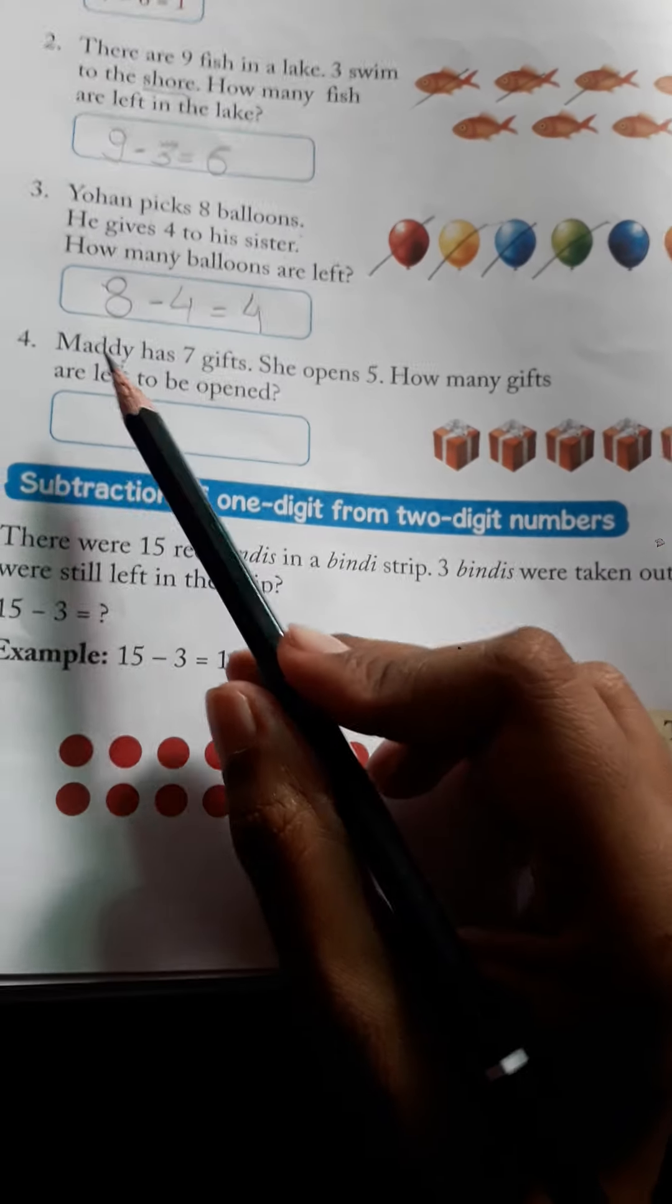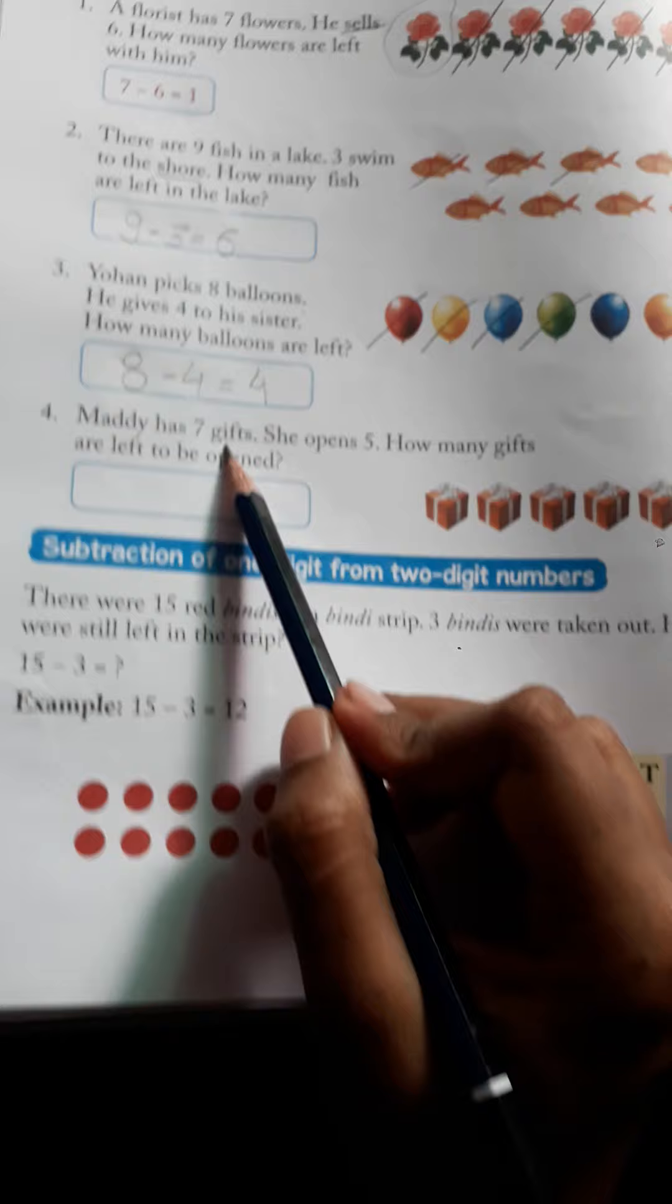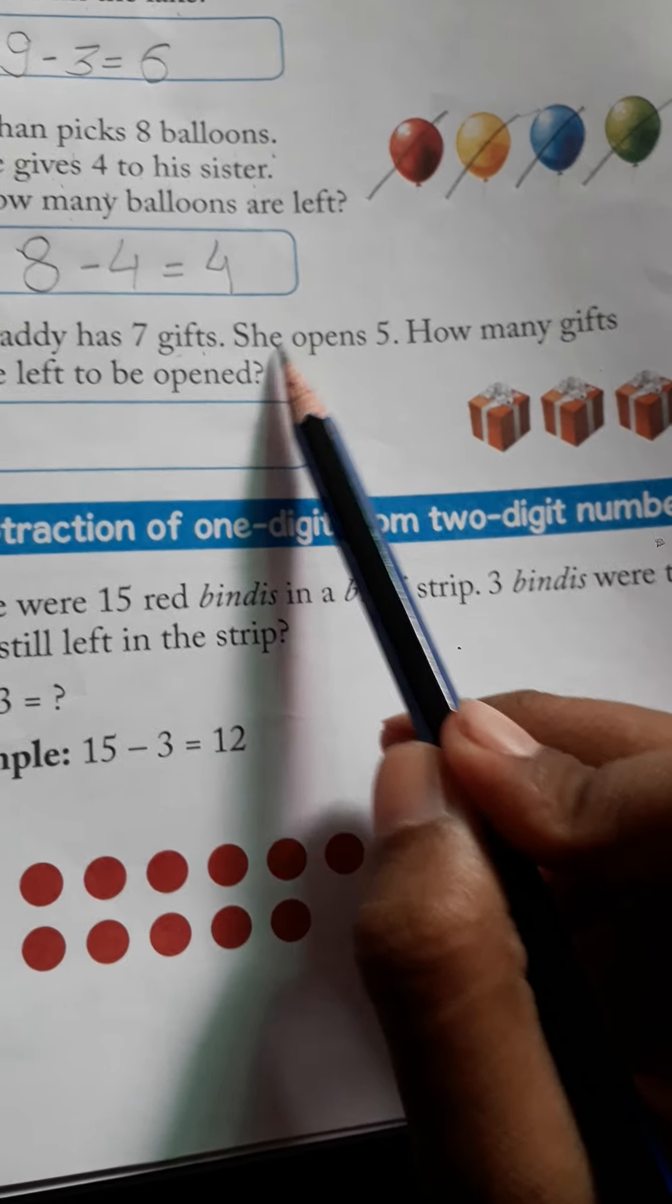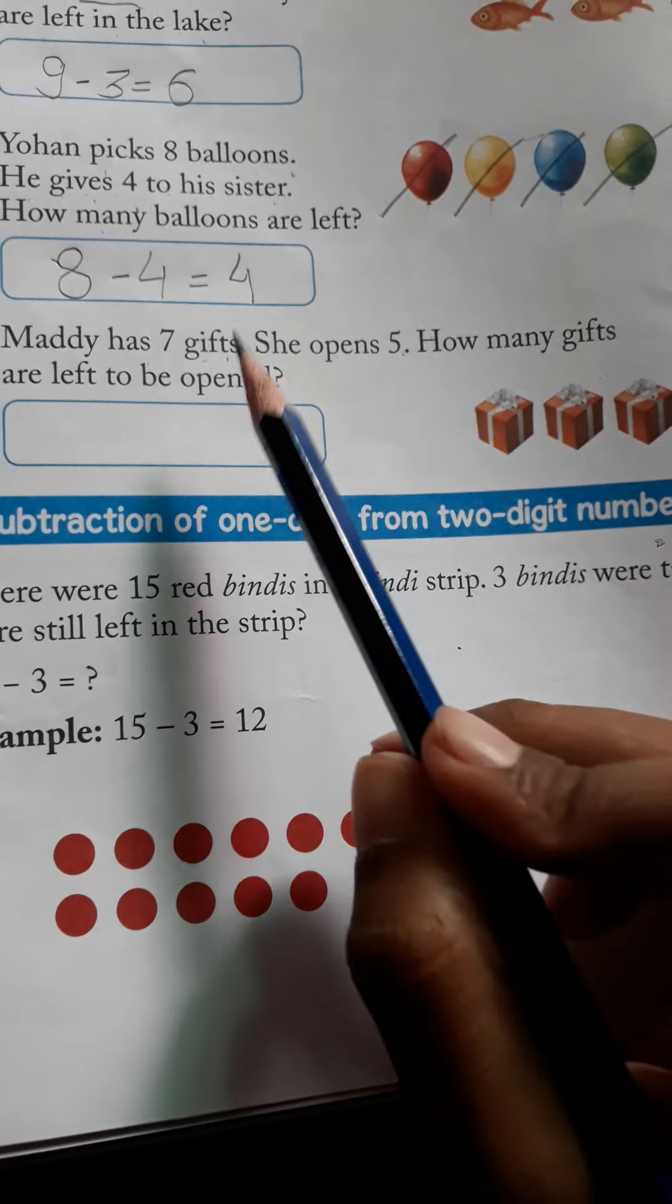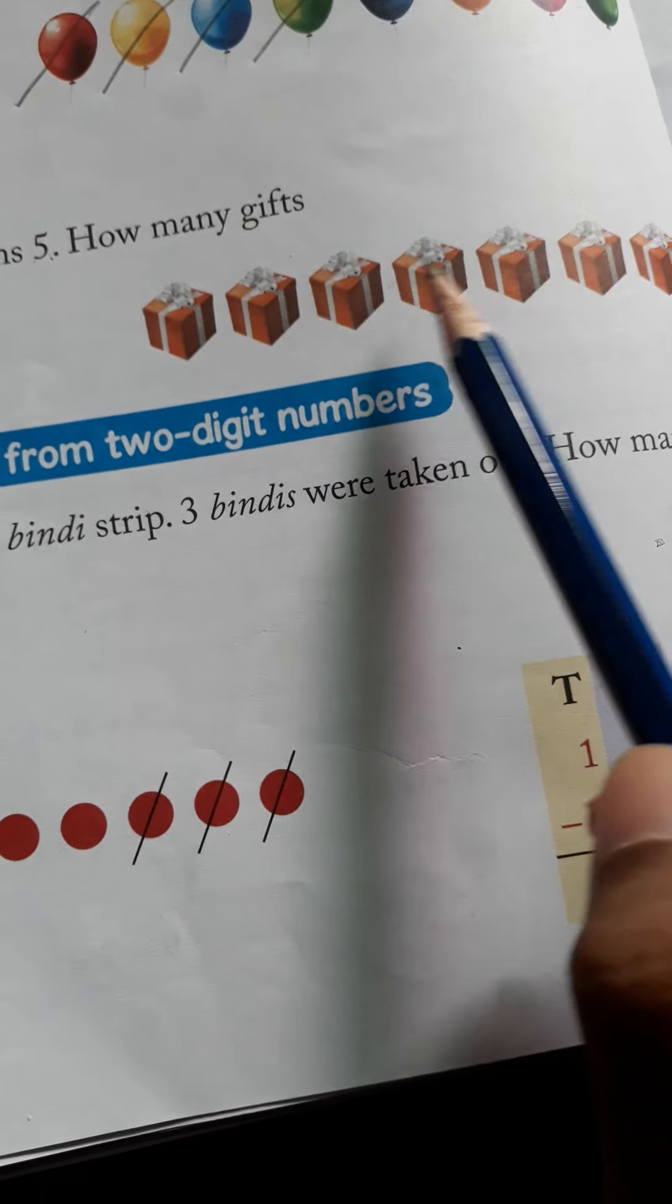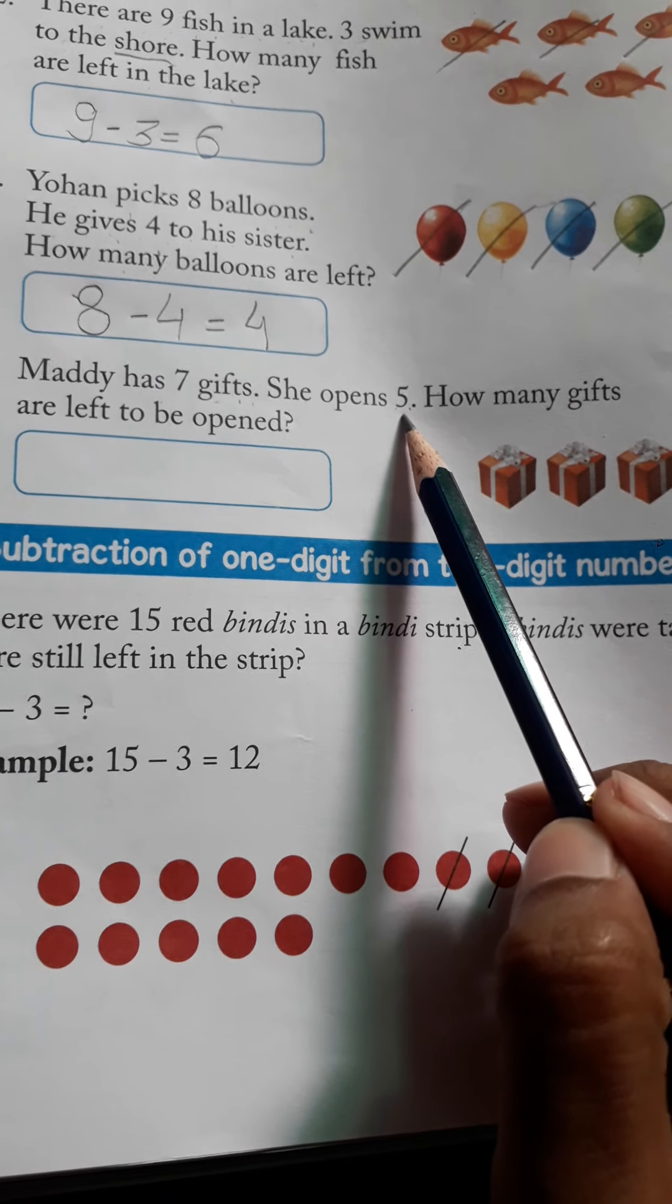Now last. Maddie has 7 gifts. There is a child, Maddie, who has 7 gifts. She opens 5. Maddie has 7 gifts, she has 7 gifts. Let me count: 1, 2, 3, 4, 5, 6, 7. That's 7 gifts. She opens 5.